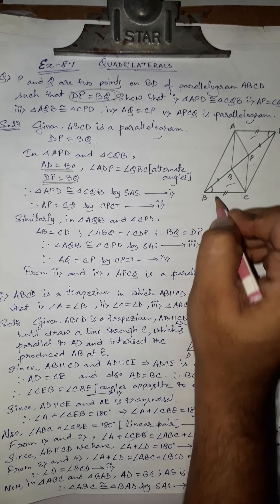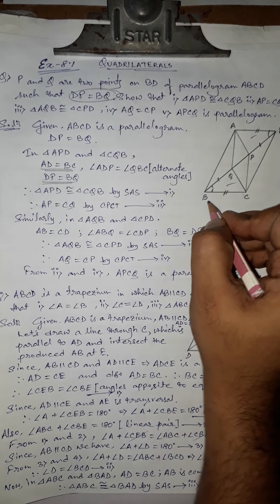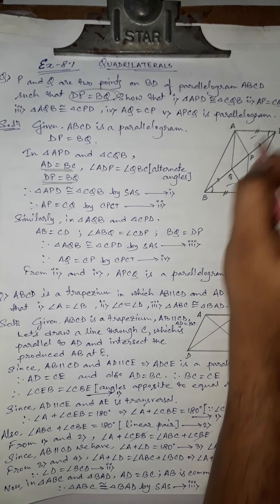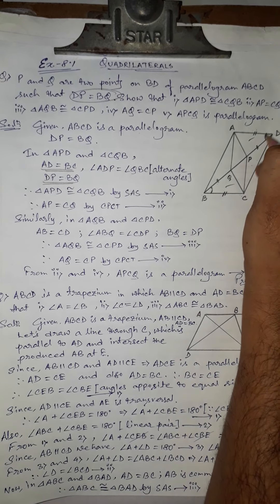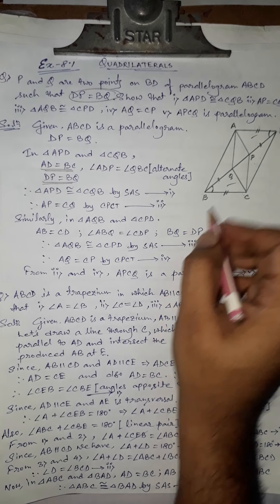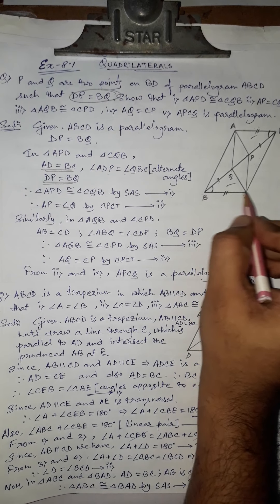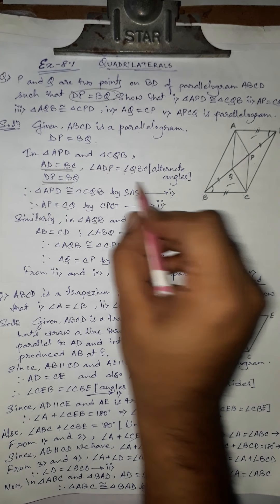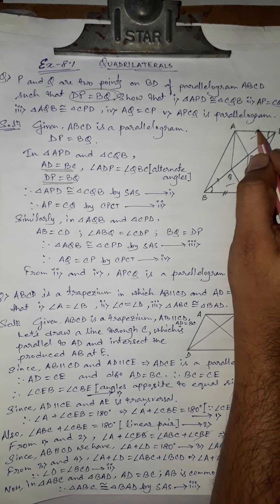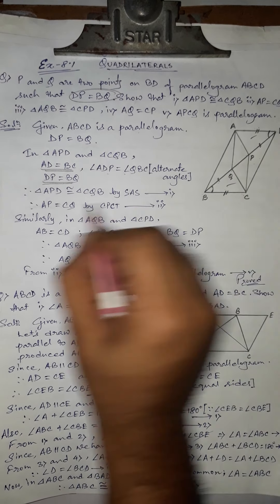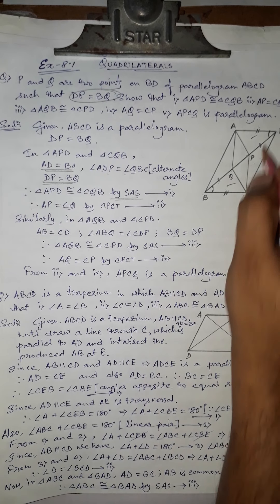Third condition: these angles are alternate angles because AD and BC are parallel lines and BD is a transversal. So angle ADP equals angle QBC — these two alternate angles are equal. By SAS, triangles APD and CQB are congruent. That is proof number one.